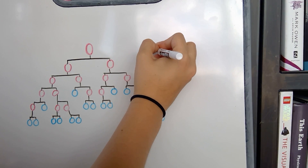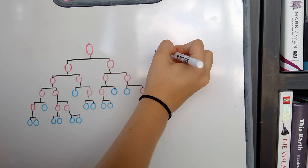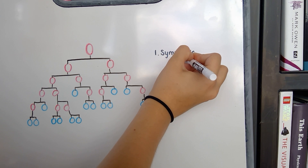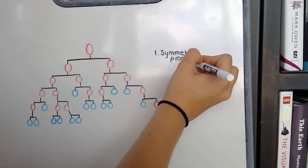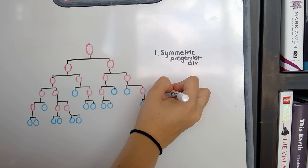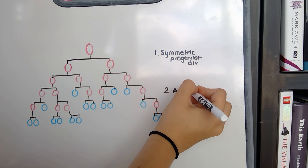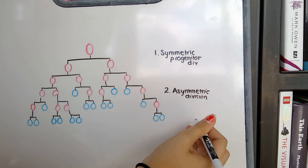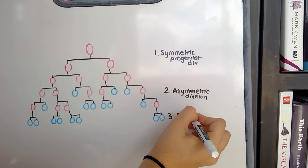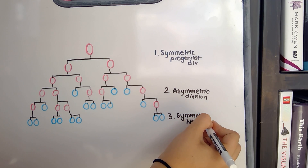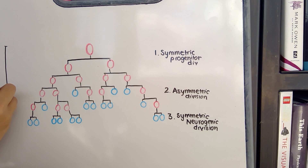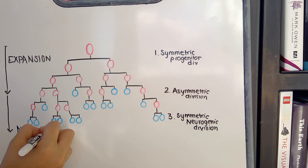The cells of the neural tube go through three patterns of division, which can be divided into two broader phases. It initially begins with predominantly symmetric progenitor divisions in something called the expansion phase, where essentially the developing neural tube is increasing the volume of progenitors at its disposal to further differentiate. Asymmetric divisions then begin, where neurons can begin to delaminate from the tube, and once delaminated, they exit the cell cycle and therefore no longer produce any daughter cells. Finally, symmetric division resumes in the neurogenic phase, where all cells divide into two delaminating daughter neurons.